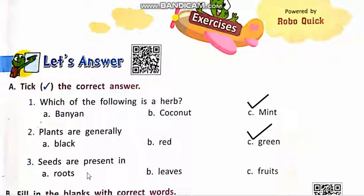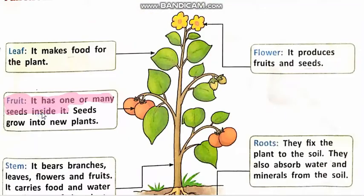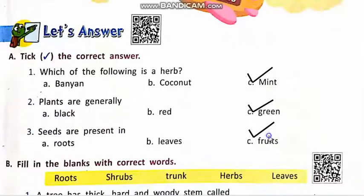Number 3. Seeds are present in. A. Roots. B. Leaves. C. Fruits. Fruits — it has one or many seeds inside it. Seeds jo hain, wo fruit mein bante hain. So the correct answer is C. Fruits.